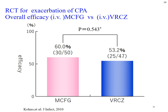This is the result of the first randomized clinical trial for CPA, comparing micafungin to voriconazole. Efficacy and safety of intravenous antifungals were tested in a hospitalized inpatient study. The definition of effectiveness is improvement of all clinical symptoms and signs, including radiological images, with no deterioration of each item. Overall efficacy was 60% for micafungin and 53% for voriconazole, with no statistical difference. It is still about 50–60% efficacy even using an average three-week administration.